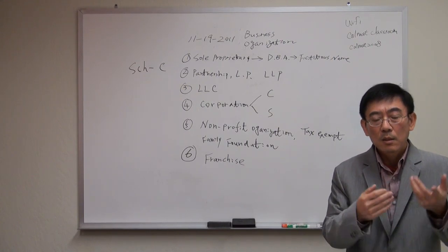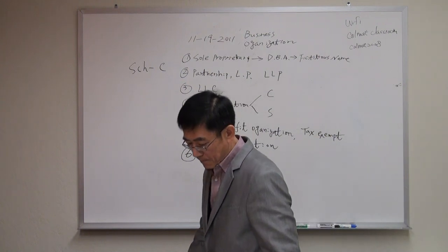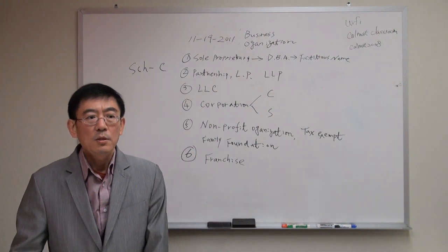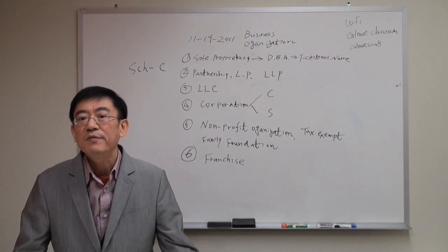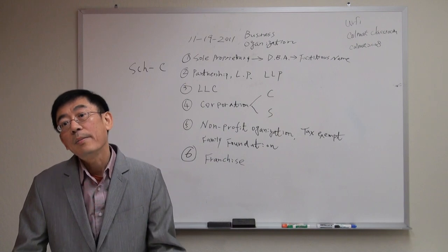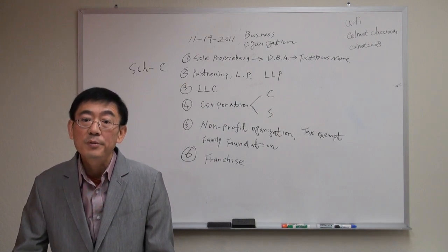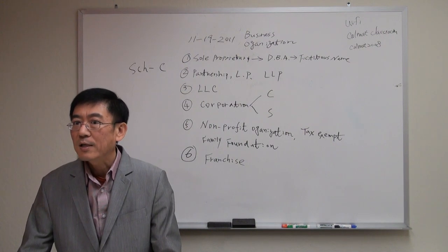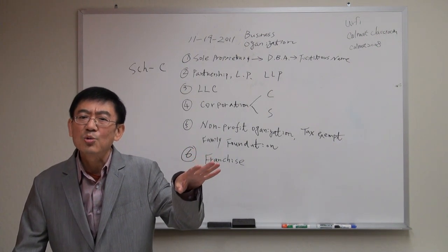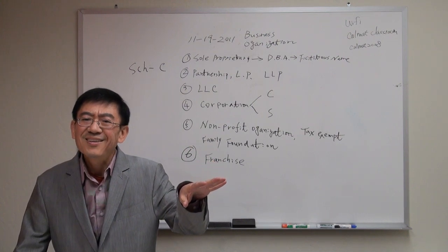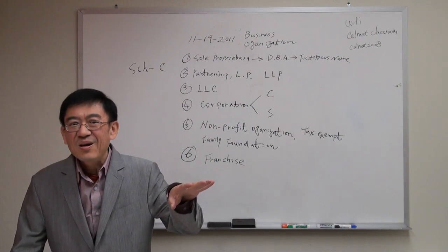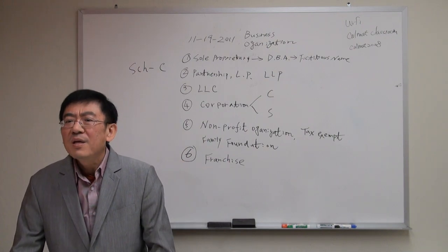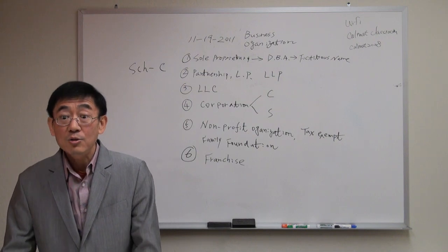Yes, it's number one issue. Does anybody know what's the limitation of the number for S corporation? How many maximum shareholders allowed? 100. There's no more issues. If you consider, by the way, for small business, that's not the issue. I do not see too many small businesses with more than 100. So that's not the big issue.